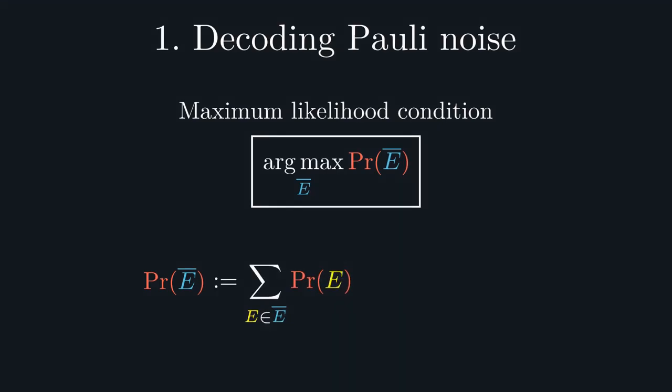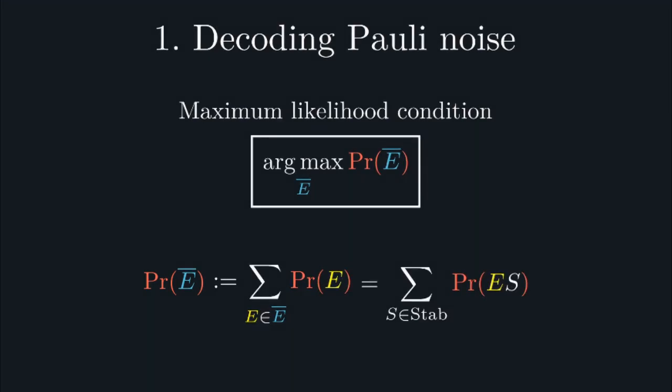For a stabilizer code, this can be rephrased as a summation over the entire stabilizer group, with analogous expressions for other code families, such as subsystem codes. Even if the probability of an individual error has a simple closed form, such as for IID error models, the exponential size of this sum makes evaluating their class probabilities typically impractical.